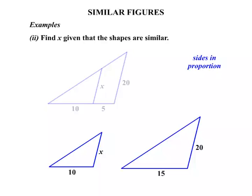Now, we can say that the sides are in proportion. So the x, which one does that match up with in the other triangle? It obviously matches up with the 20. So we say x over 20. And the other matchups are 10 and 15. So we write that it equals 10 over 15.